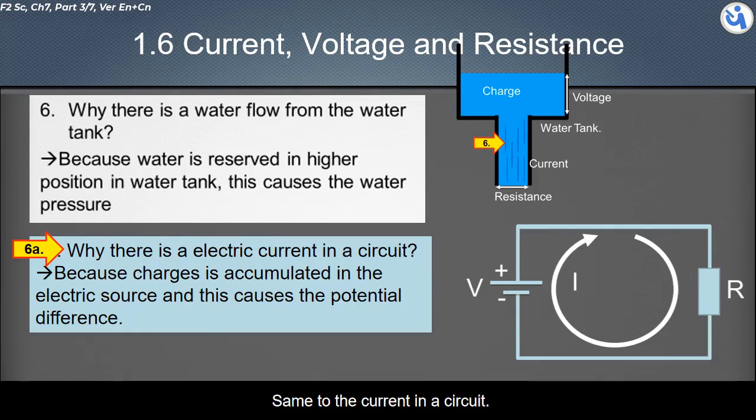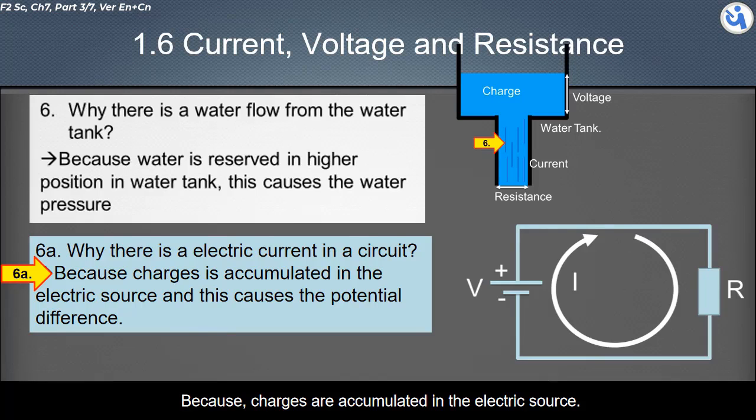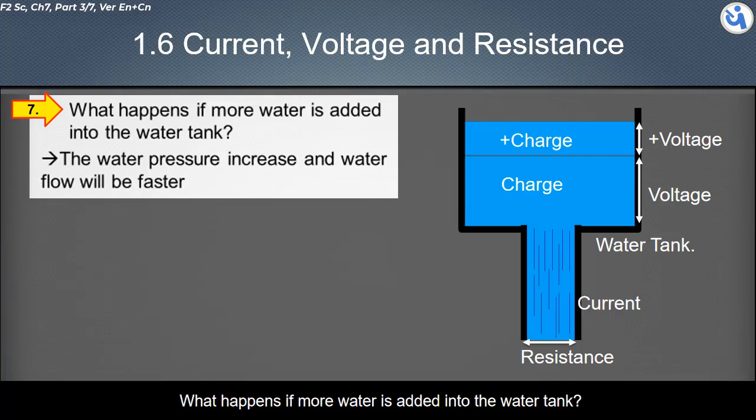Same with current in a circuit. Why is there an electric current in a circuit? Because charges are accumulated in the electric source, and this causes the potential difference.